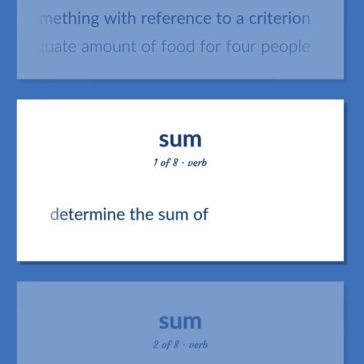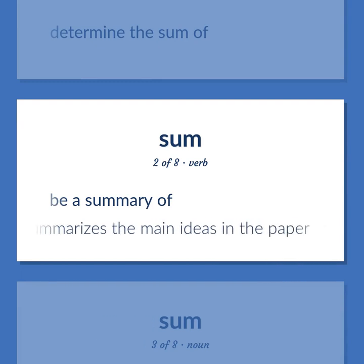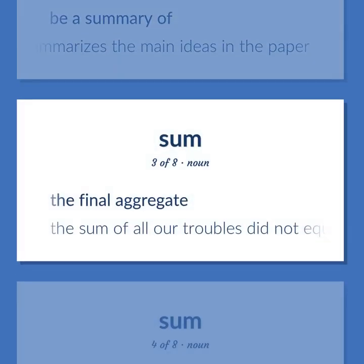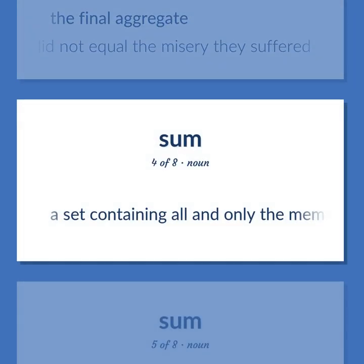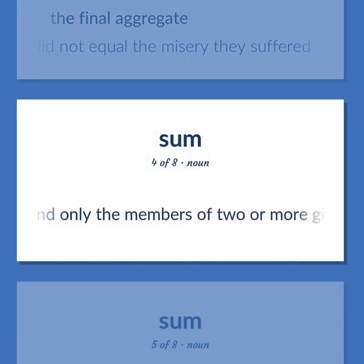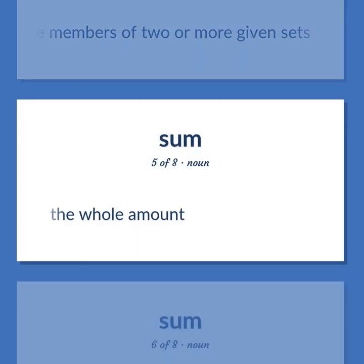Determine the sum of. Be a summary of. The abstract summarizes the main ideas in the paper. The final aggregate. The sum of all our troubles did not equal the misery they suffered. A set containing all and only the members of two or more given sets. The whole amount.